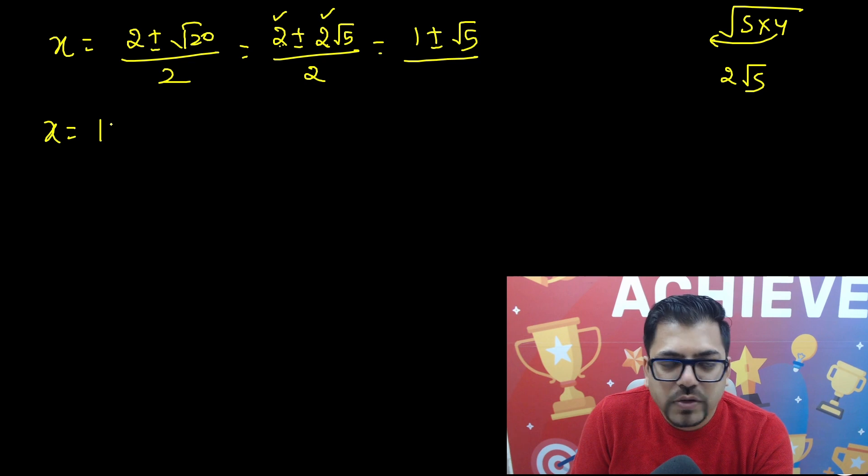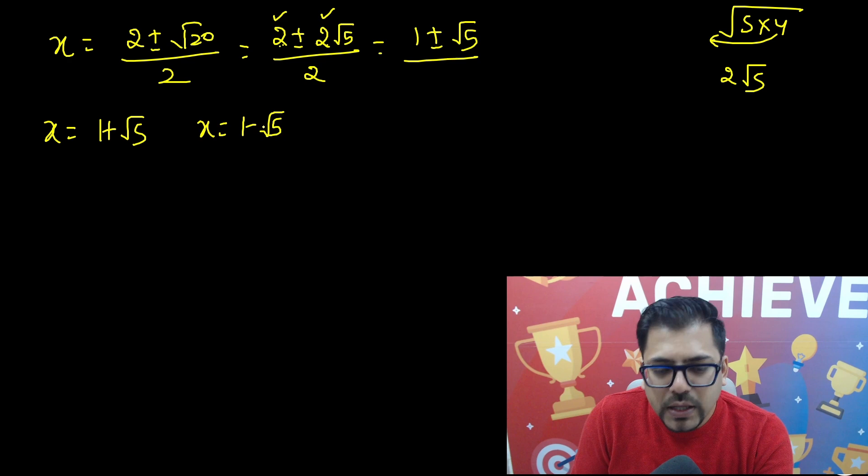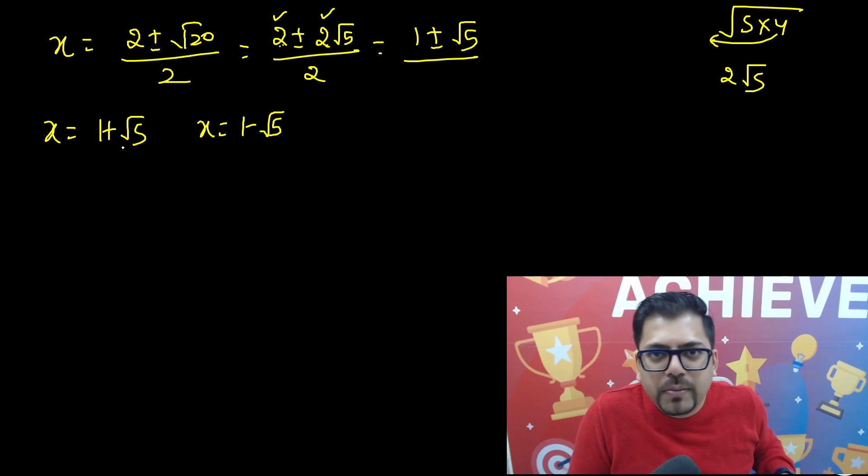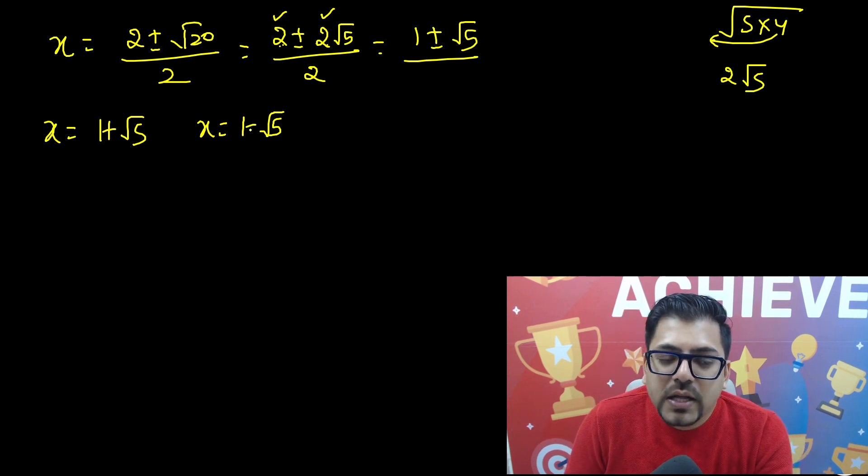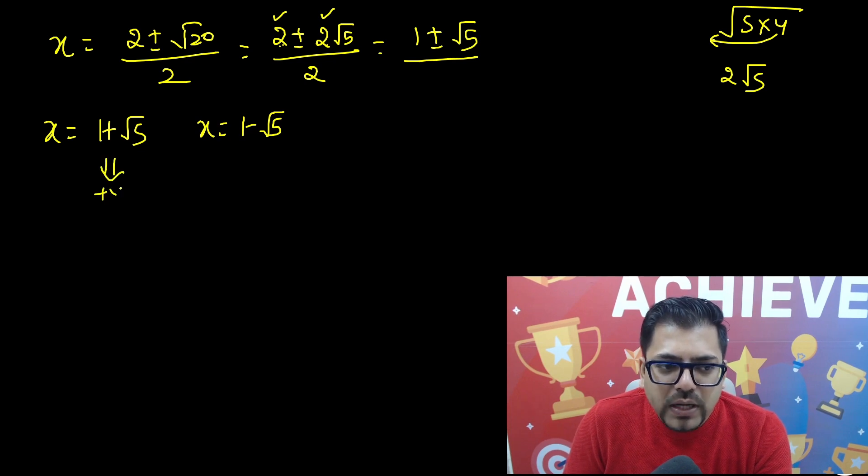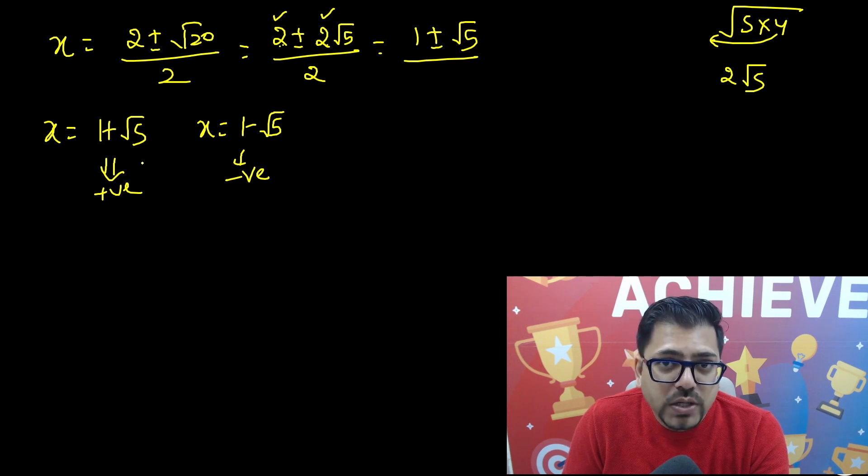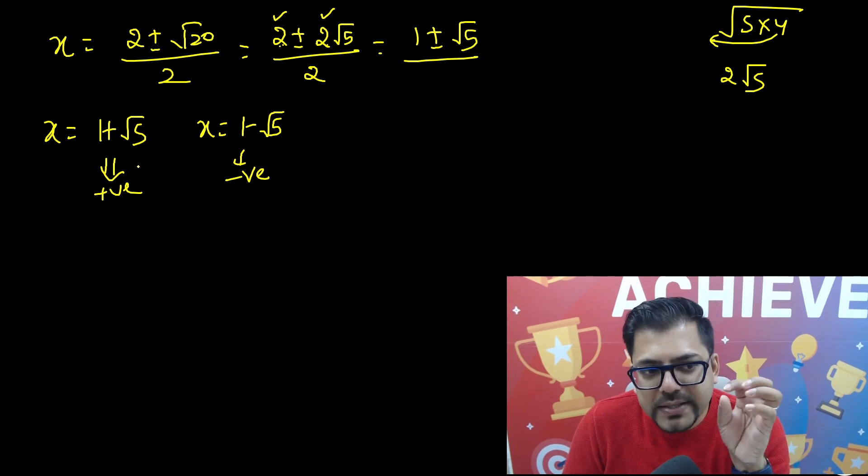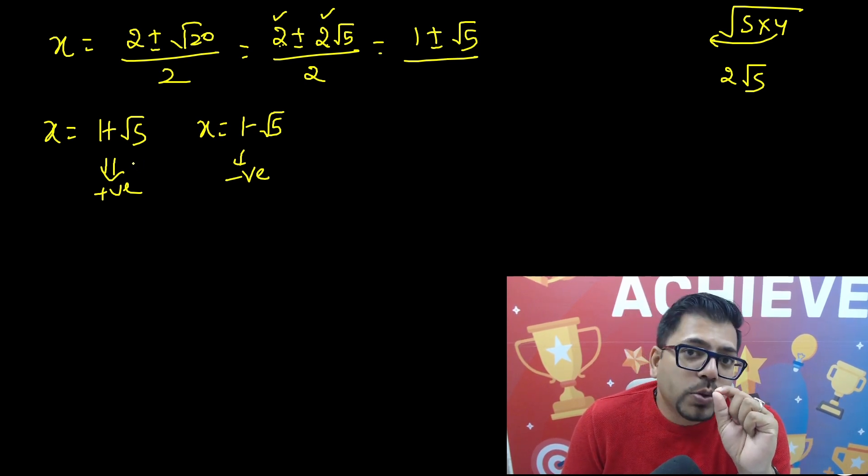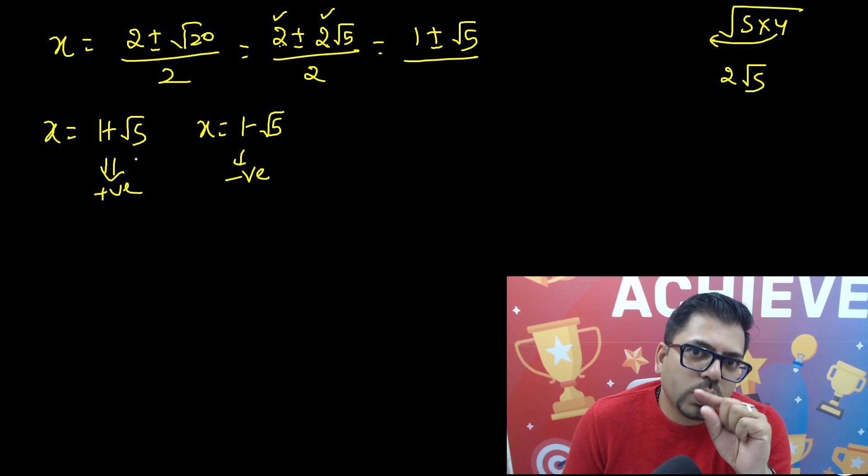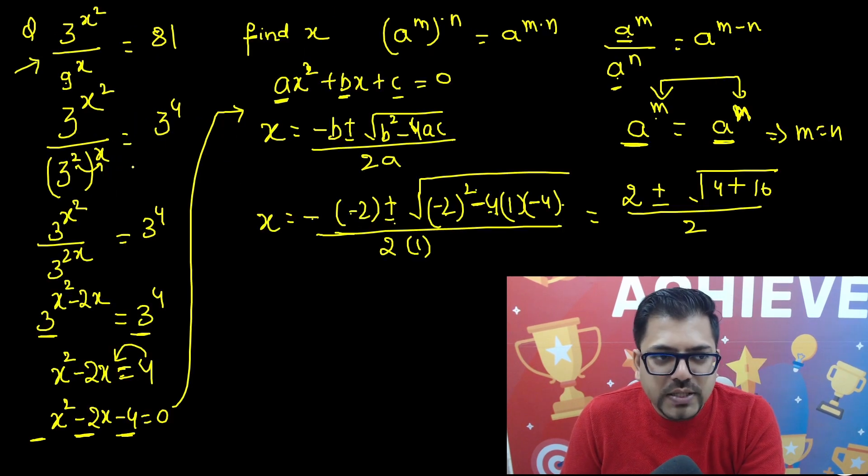So finally, you have got two values of x: that is 1 plus root 5 and x is equals to 1 minus root 5. Now you have to just check, although you won't be able to get the exact value by putting the value of x and you won't be able to check exactly that you're getting that answer or not. But just check that this is a positive value and this is a negative value. Is it going to make any difference once we put it in the equation? We have to just check that we don't get any extraneous root.